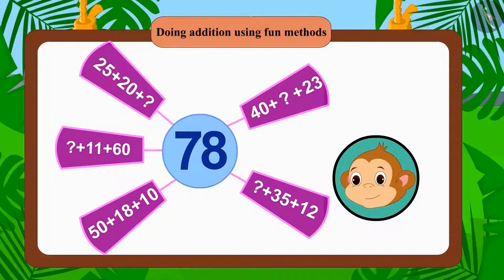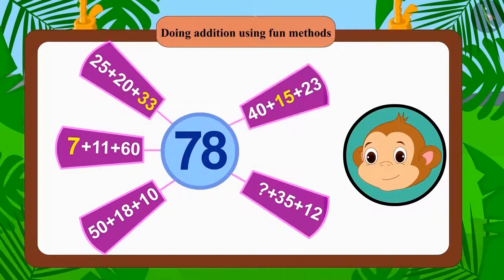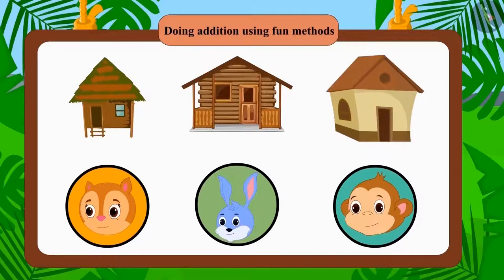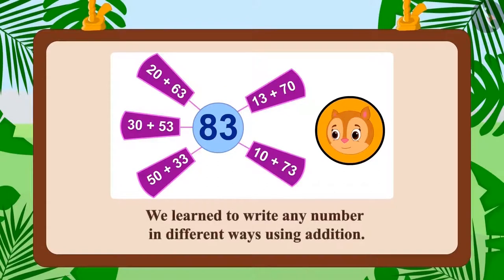Well done children, this table is filled in the right way. Finally, Chanda, Bunny and Bubban have built their houses. Children, in this lesson we learned to write any number in different ways using addition. We will learn more about this in the next lesson.